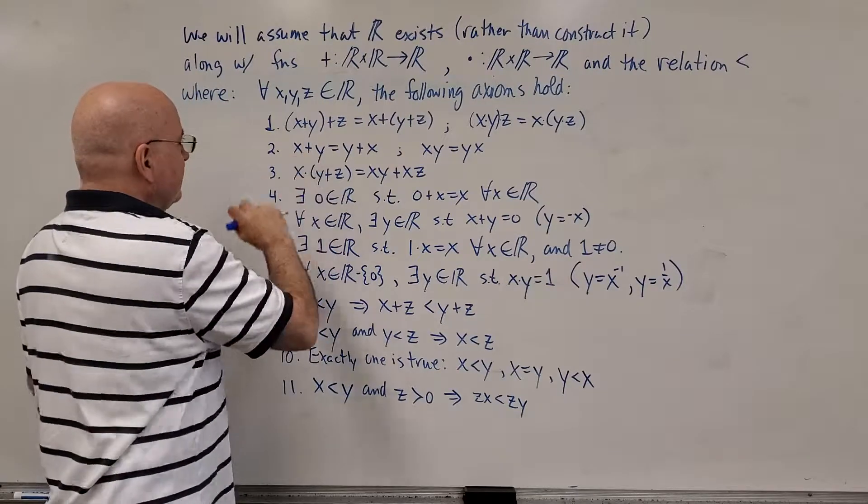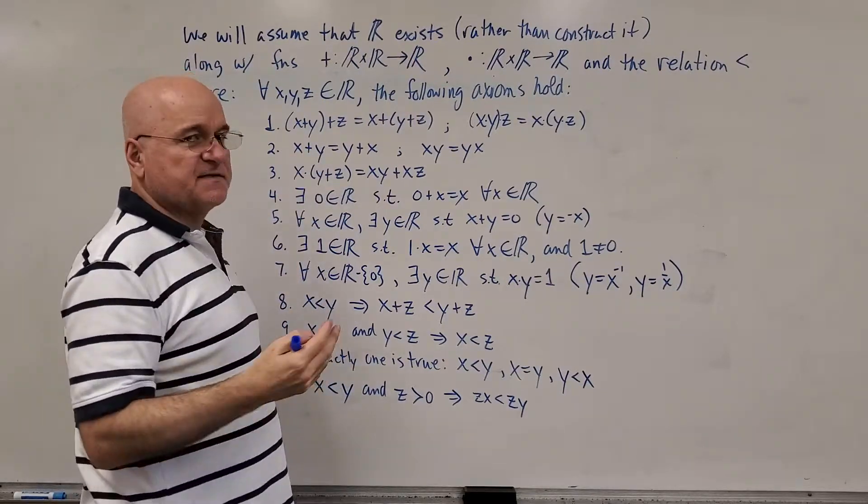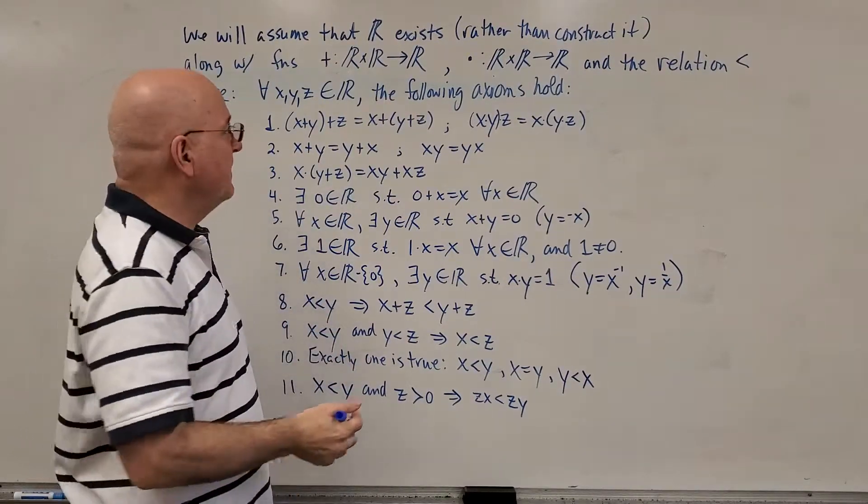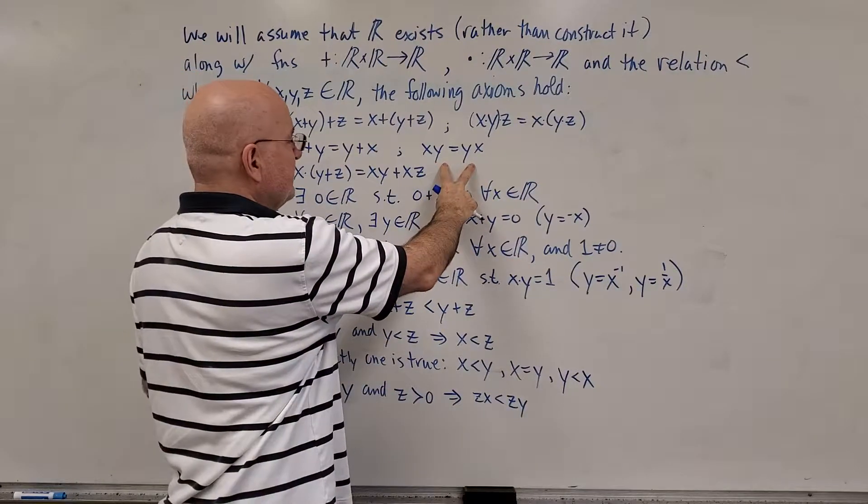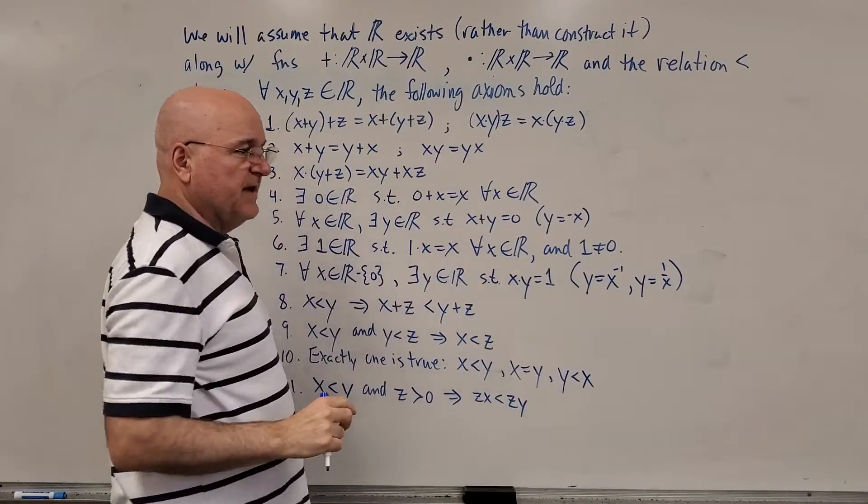Second one, x plus y is equal to y plus x. That's a commutative property of addition. There's a similar one for multiplication. It doesn't matter which order you multiply or add.